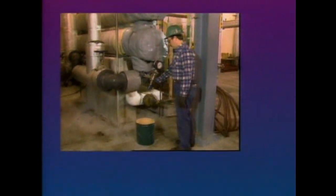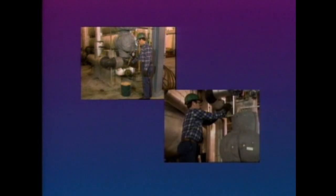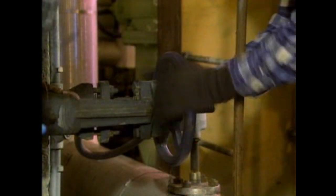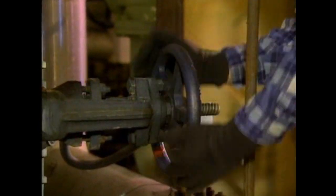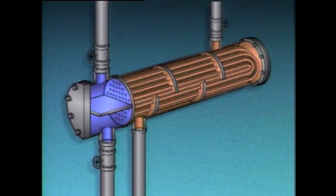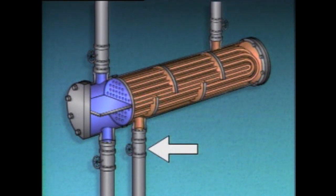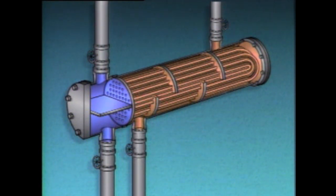When the tube side has cooled, the operator opens the tube side drain and vent valves. This allows air to enter the tube side and drains the process fluid. The operator then shuts the shell side inlet valve. On the heat exchanger shown in this example, the shell side has no isolation valve on its outlet. Some shell and tube heat exchangers have an isolation valve on this outlet; with those heat exchangers, the isolation valve must be shut to completely isolate the heat exchanger.